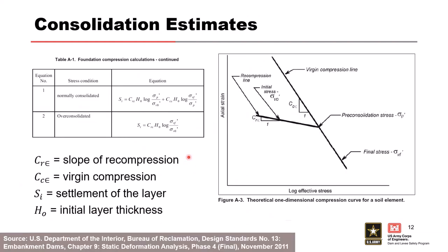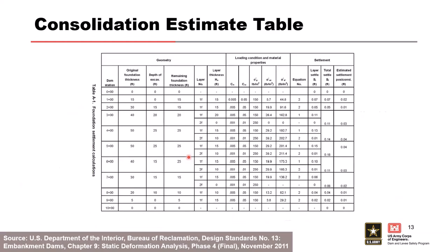This table from Design Standard 13 shows the different calculations used to estimate foundation settlement, broken up by station across the dam. Some dams have one soil layer; others have two layers with different properties requiring separate estimates. One thing to note: the table estimates total settlement and the portion anticipated after construction. For the exercise, I've simplified this by assuming all total settlement is post-construction — something you normally wouldn't do, but it keeps things manageable.